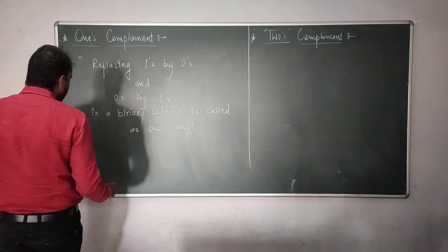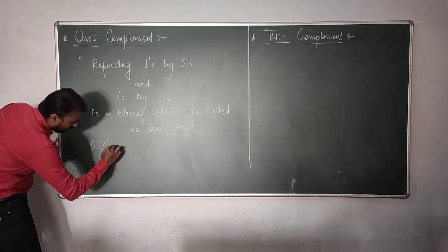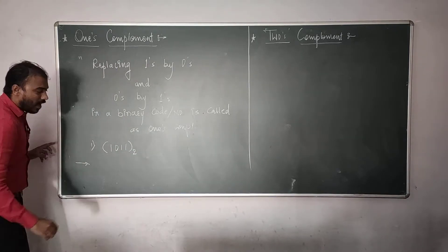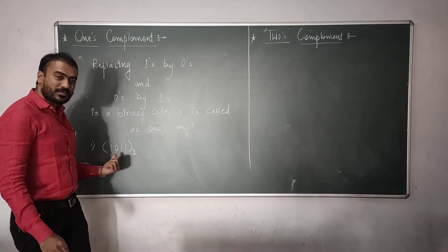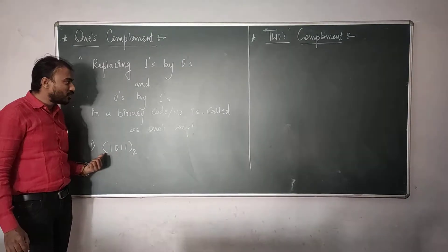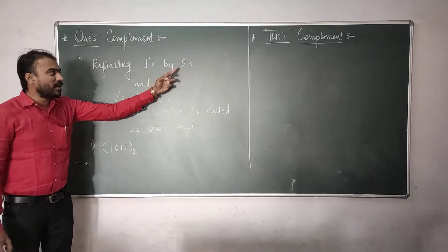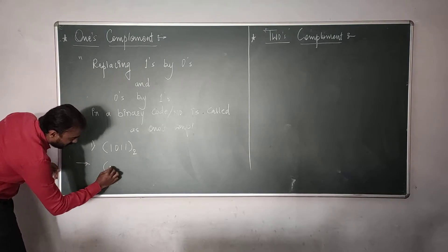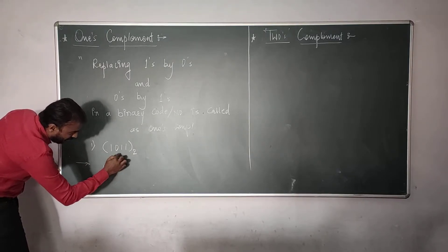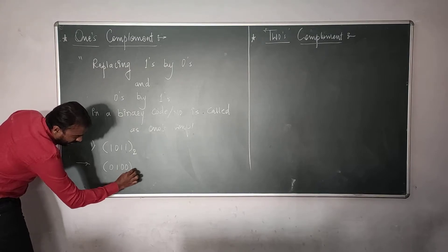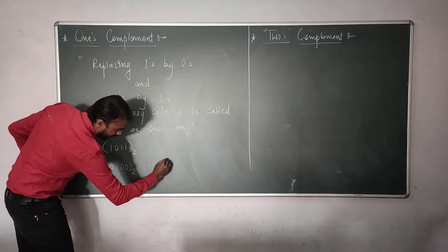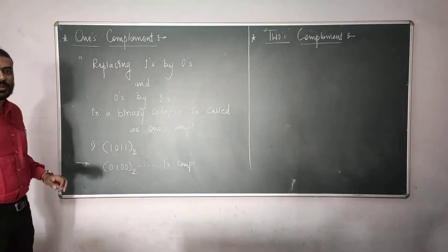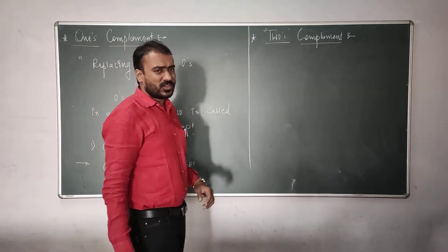Let us see an example. This is very easy. If I want to convert a given binary number into its 1's complement, what should I do? I should replace 1's by 0's and 0's by 1's. If I replace 1's by 0's and 0's by 1's, then this will be the 1's complement of the given binary number. So, it is very easy.